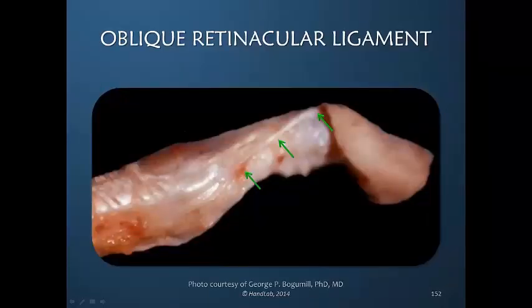Dr. Mogumil has graciously provided a nice image of the oblique retinacular ligament, although as you can see it is not terribly distinct and is somewhat difficult to identify. Here is the oblique retinacular ligament at the PIP joint and the DIP joint, with the DIP joint flexed. This structure is also called Lansweer's ligament.